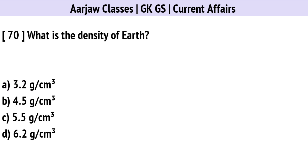What is the density of Earth? The right option is C: 5.5 grams per cubic centimeter.